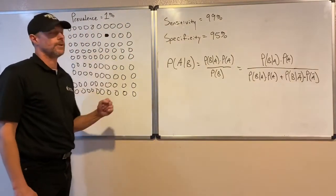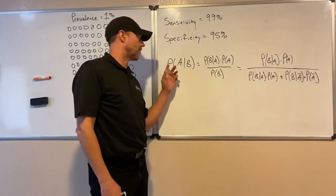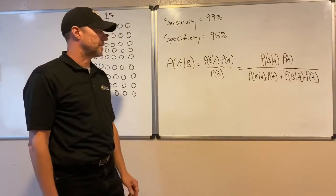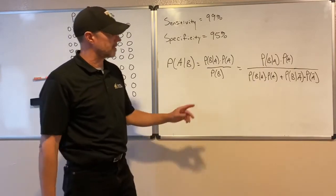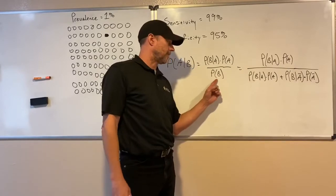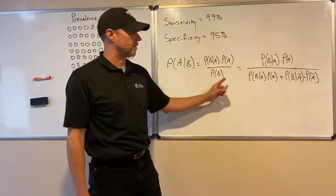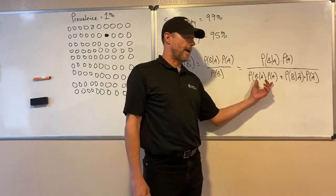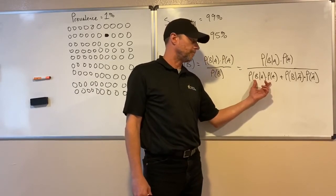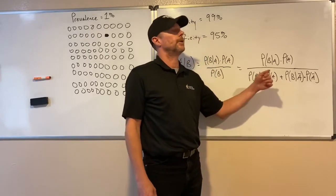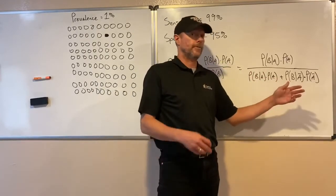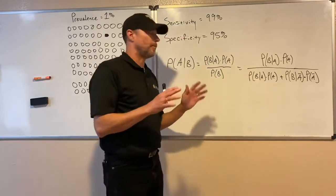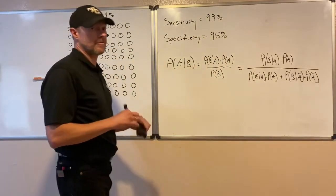Bayes' theorem says that the probability of A given some information is equal to this formula. The formula is kind of scary — finding the probability of the given event involves a couple of ways to get a positive result: having the disease and getting a positive result, or not having the disease but getting a positive result anyway due to false positives. We're not going to use the formula. You don't need it.